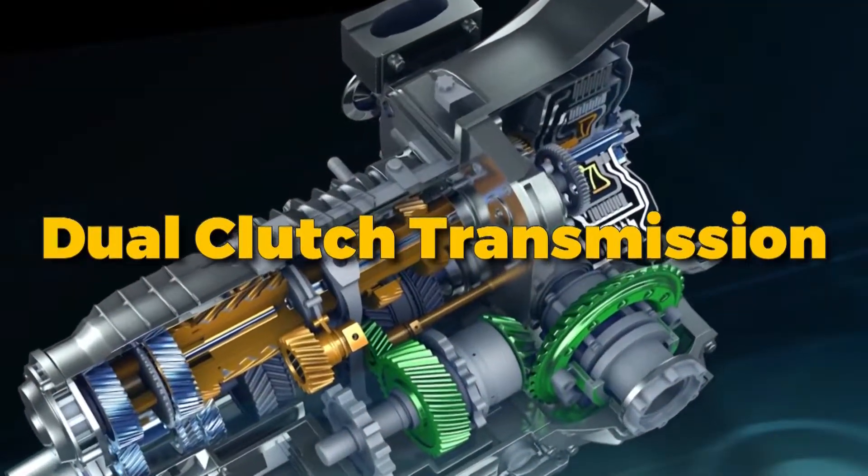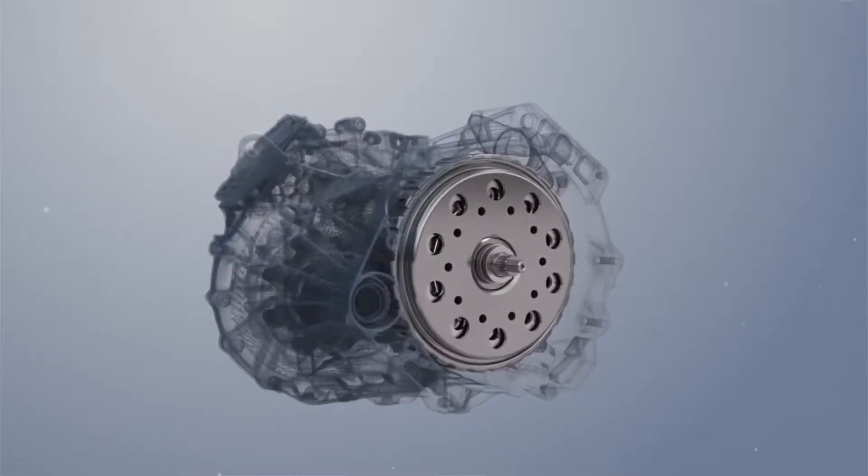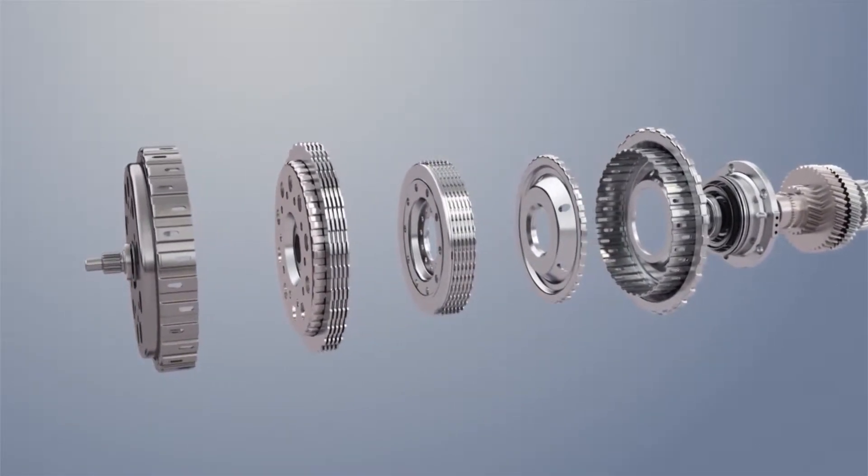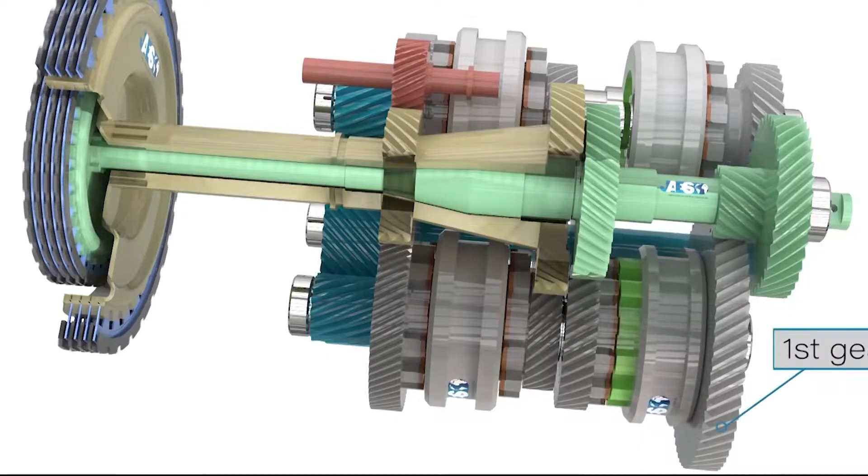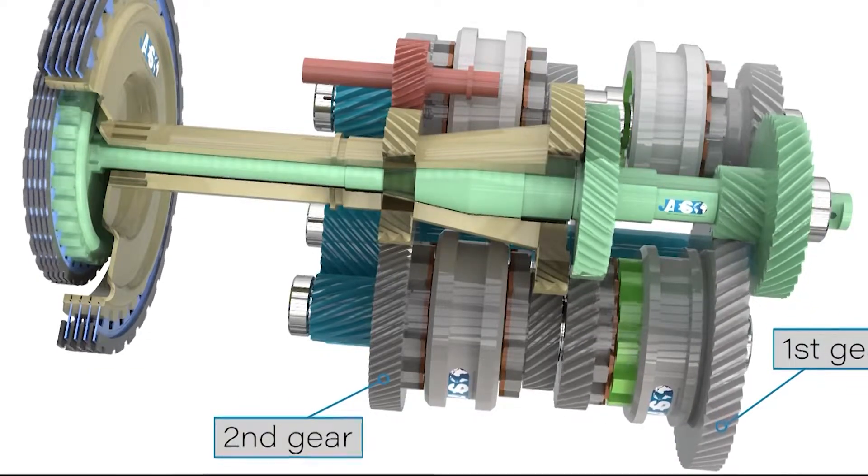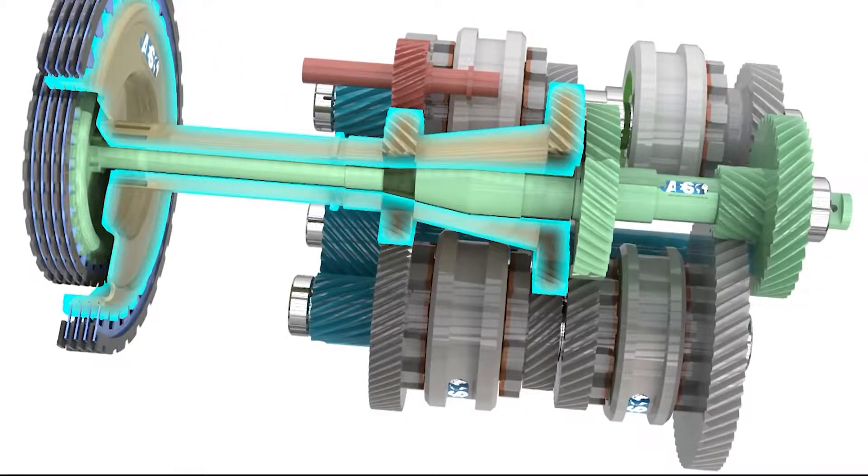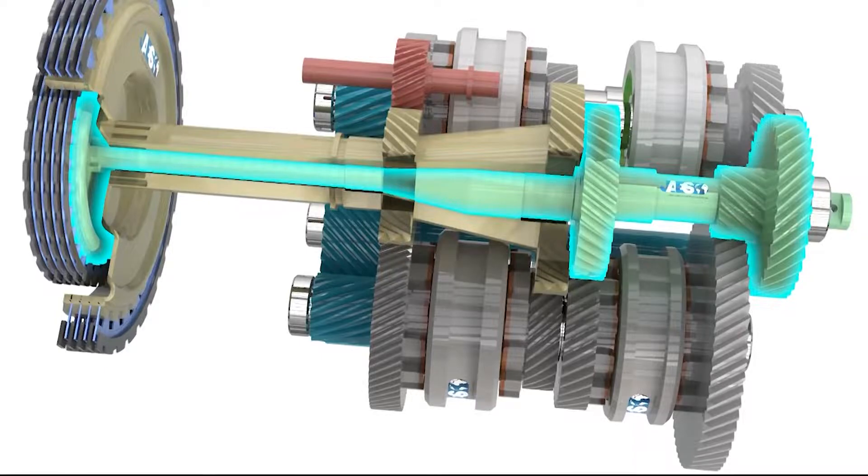Dual Clutch Transmission, or DCT, employs two clutch packs. The odd-numbered gears are controlled by one clutch while the even-numbered gears are controlled by the other. When first gear is engaged, for example, the odd clutch is engaged and the even clutch pre-selects second gear, allowing for continuous shifts without interrupting power flow from engine to transmission.